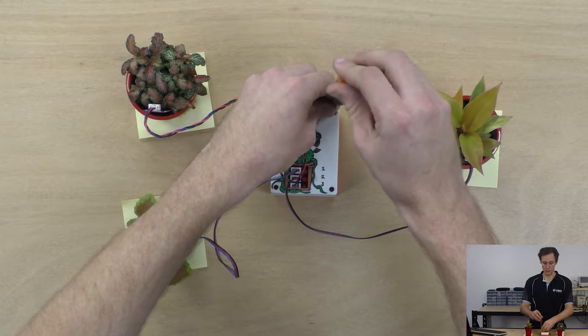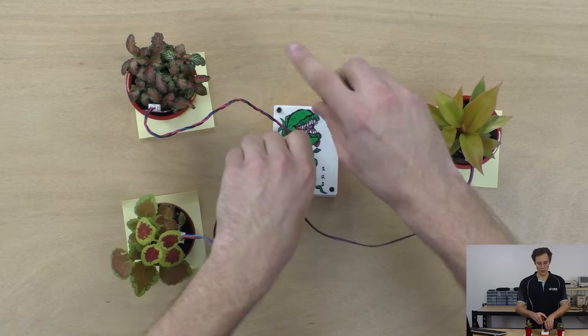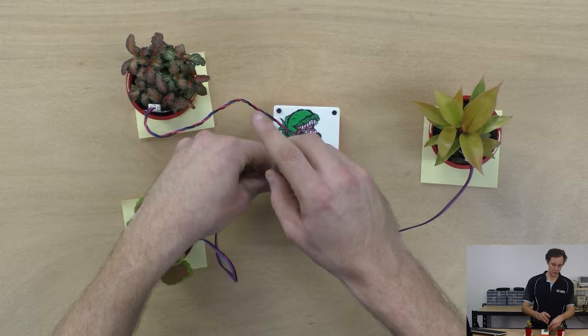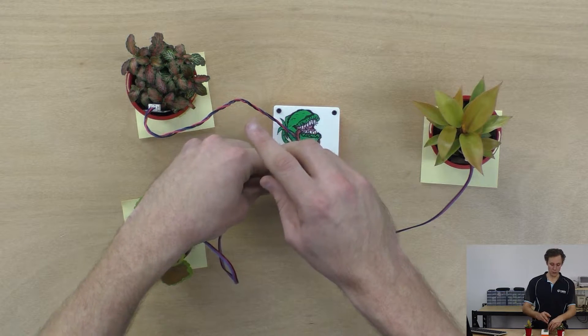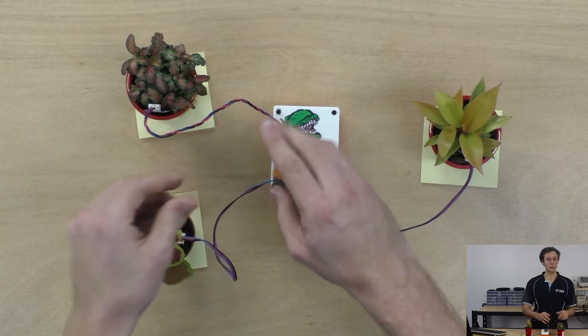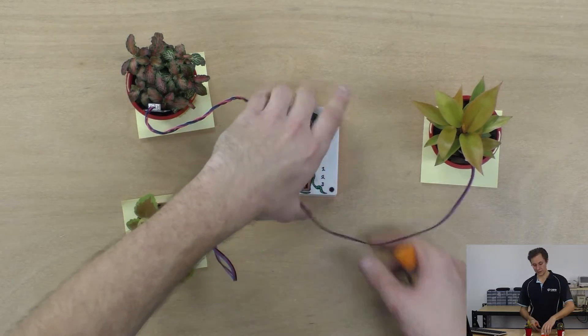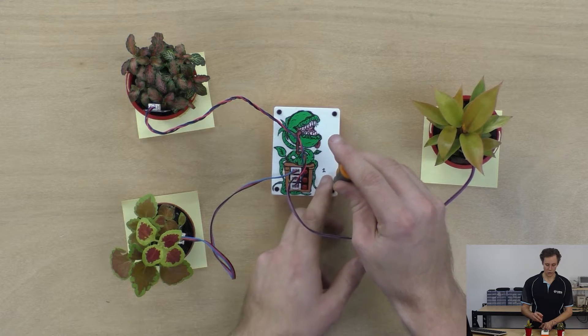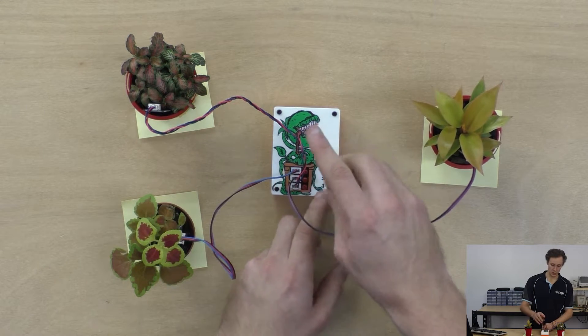Do these screws up and what's going to happen is in a moment the particle is going to power back on and when it wakes up it's going to check the soil values of all of my plants and if they need watering then it is going to let me know with one of these LEDs and then it's also going to send me an email reminding me that I need to water the plants which I think is pretty cool.